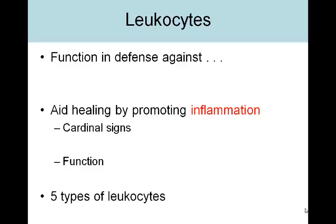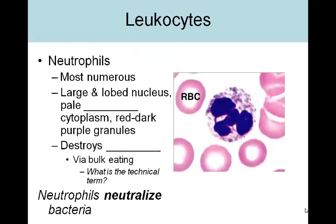Now we're going to look at our different types of leukocytes. There are five types of leukocytes: neutrophils, eosinophils, basophils, monocytes, and lymphocytes. We'll take a look at each of these. The first one we're going to look at are the neutrophils, and they are the most abundant of all the white blood cells.